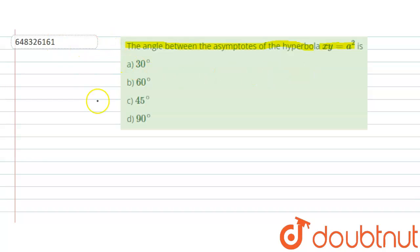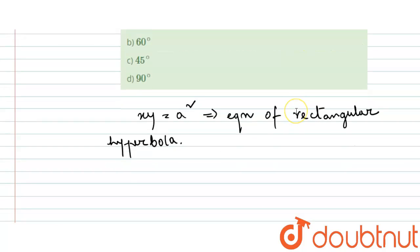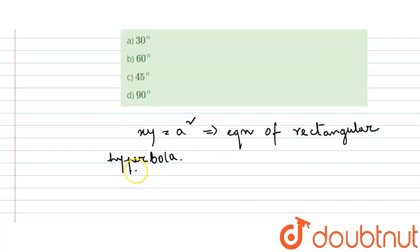So we can simply say from the equation, let me write down the equation: xy is equal to a squared. This is basically the equation of a rectangular hyperbola. And we know for rectangular hyperbola, eccentricity will be root 2.